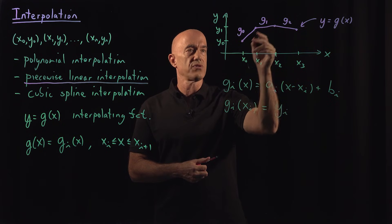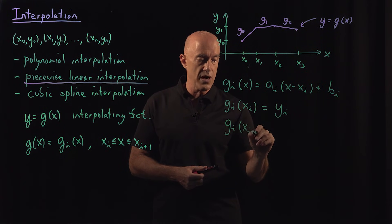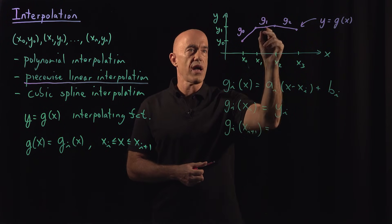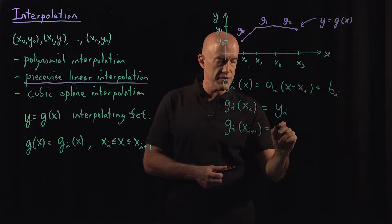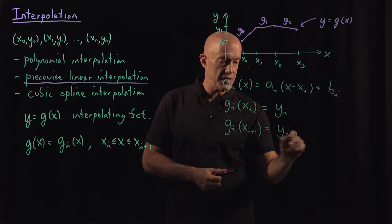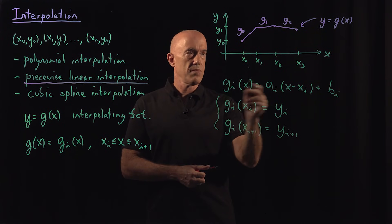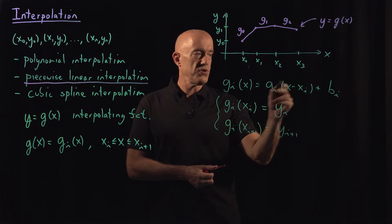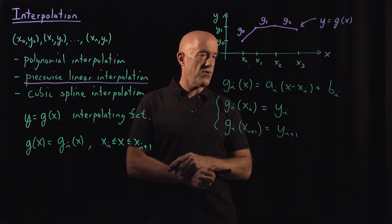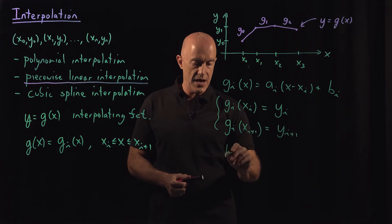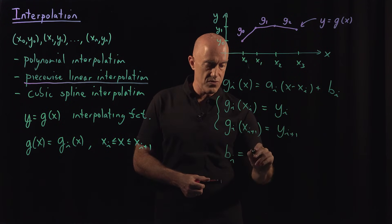So g has to go through the point on the left. We also know that g i at x i plus one, which is the point on the right. So g naught at x one, g one at x two, has to go through the point on the right. So this is supposed to be equal to y sub i plus one. So these are our two constraints on g. So each piecewise linear polynomial has two free constants and two constraints. So that means we can solve for a i and b i.